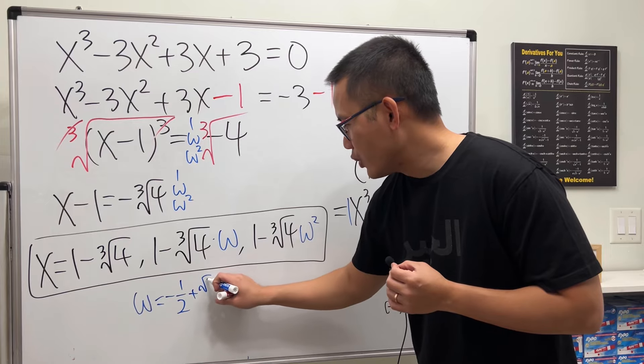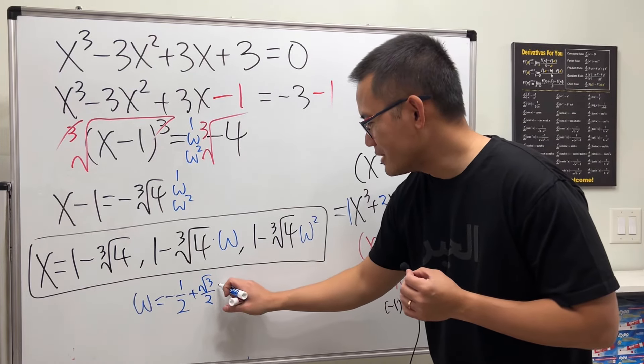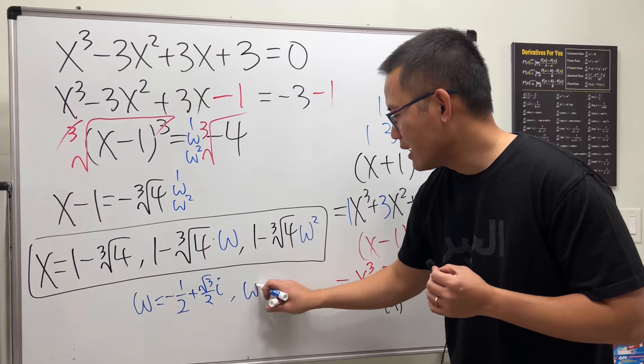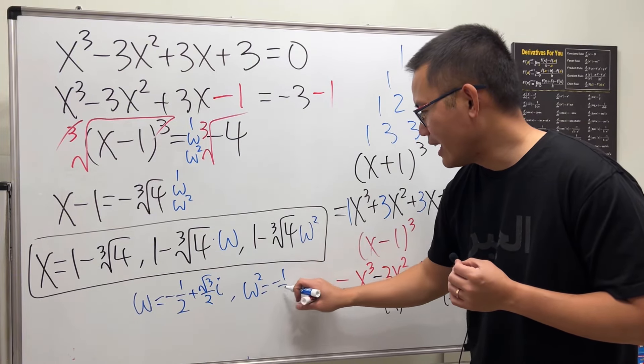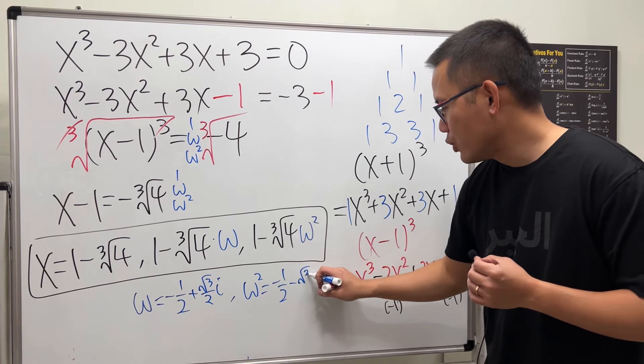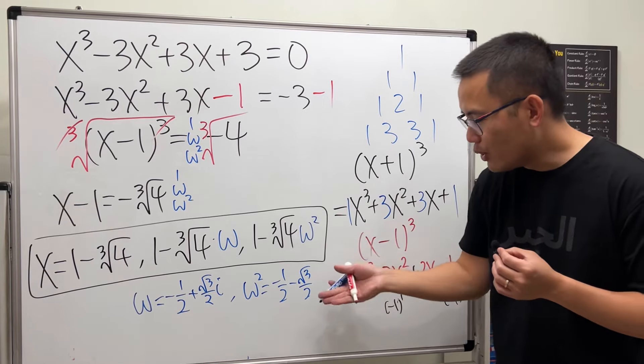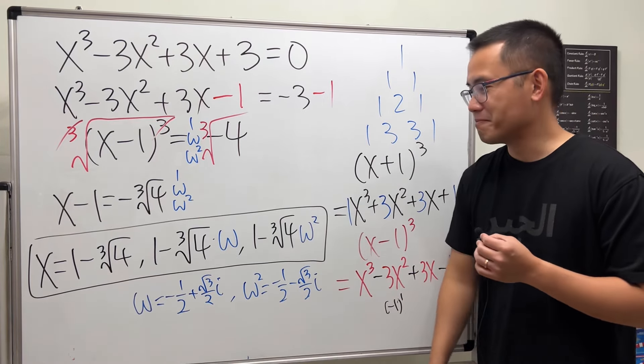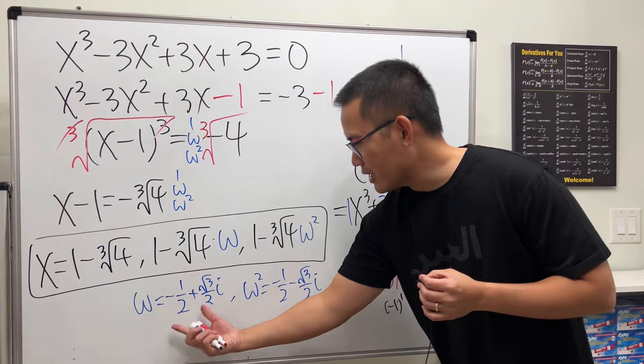And then ω² is -1/2 - (√3/2)i. So take this multiply with that, work that out, and then do the 1 minus, etc.